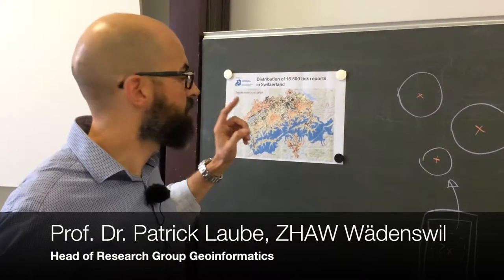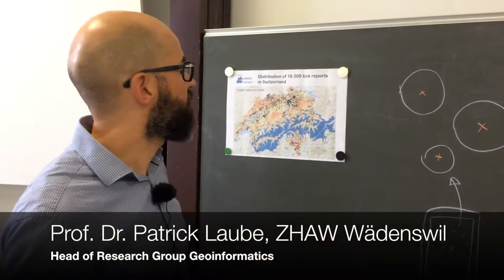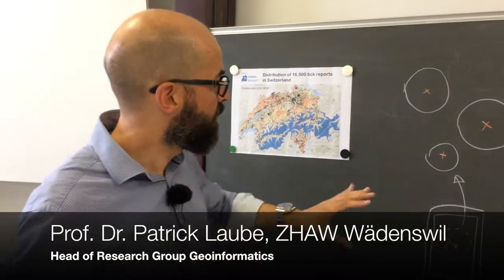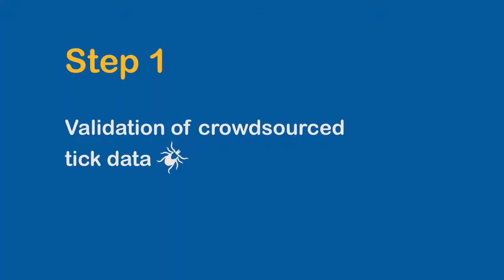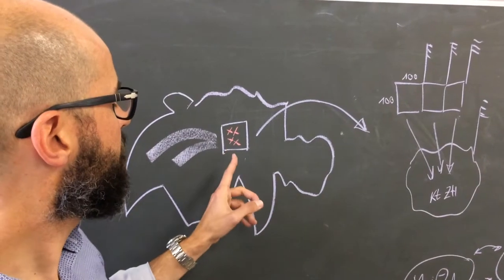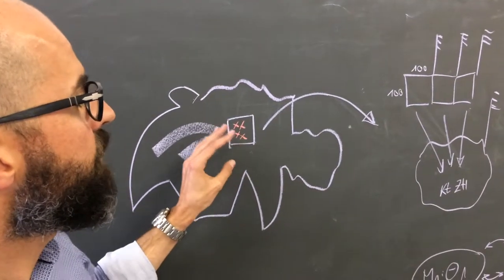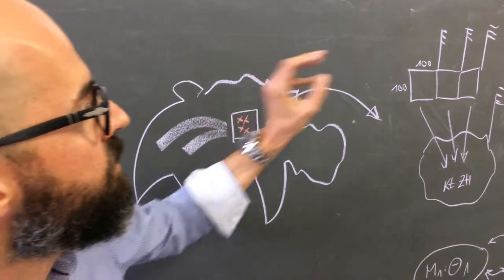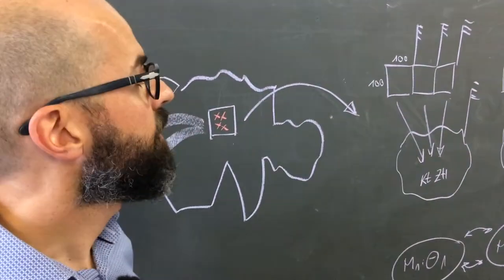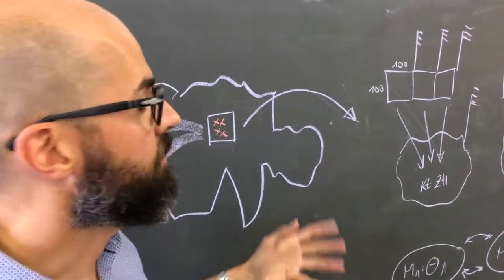Our starting point is this unique data set of crowdsourced information that comes from the app. Each individual data point comes with its uncertainty. The tick density data we have, we then merge with additional information from our built and natural environment.